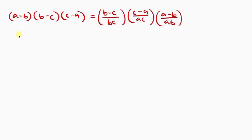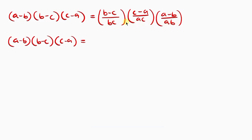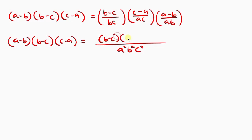So we have A minus B times B minus C times C minus A on the left, equal to the product of those three fractions on the right. Notice the numerators on the right contain B minus C, C minus A, and A minus B — the same factors. A minus B cancels, B minus C cancels, and C minus A cancels, leaving 1 on the left equal to 1 over A squared B squared C squared.